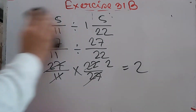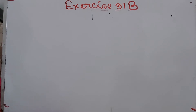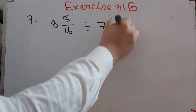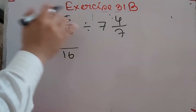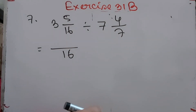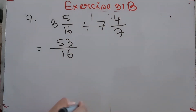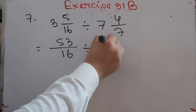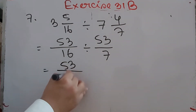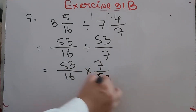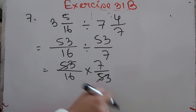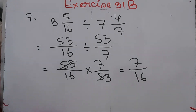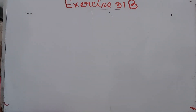Number 7: 3 whole 5/16 divided by 7 whole 4/7. Convert: 16×3 = 48 plus 5 = 53/16, and 7×7 = 49 plus 4 = 53/7. Multiply 53/16 by 7/53. Dividing 53 by 53 gives 1, so the answer is 7/16.